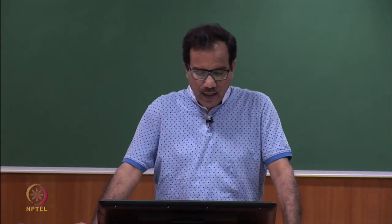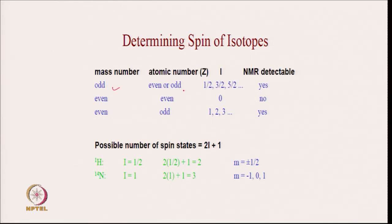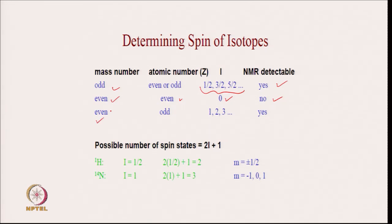In general, if the mass number is odd and the atomic number is even or odd, I will have a value of 1/2, 3/2, or 5/2 — fractional values — and they are detectable by NMR. If the mass number is even and the atomic number is even, then I is going to have a value of 0. The nuclei with even mass number and even atomic number is not NMR active. A nuclei with even mass number and odd atomic number is going to have a value of I equal to an integer 1, 2, or 3, and it is NMR active.